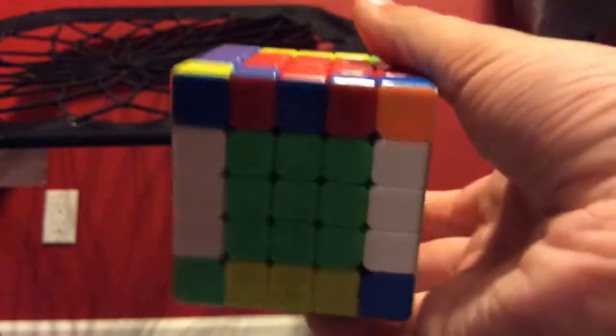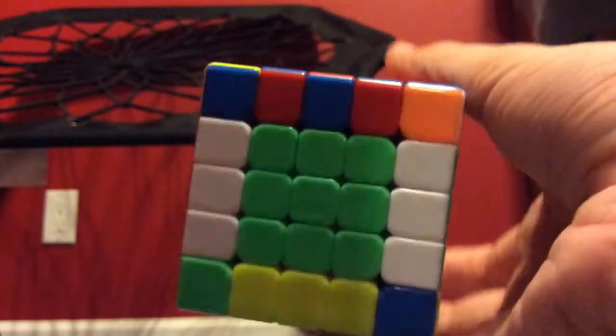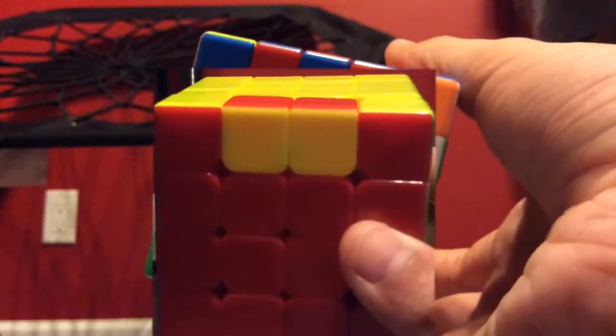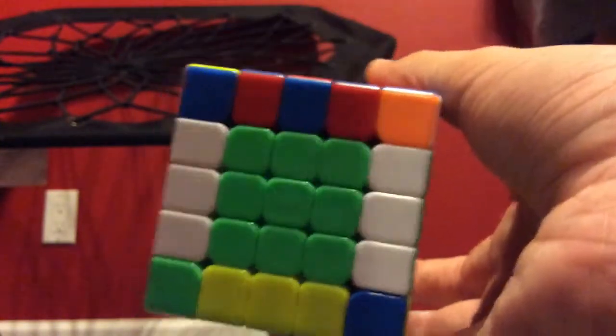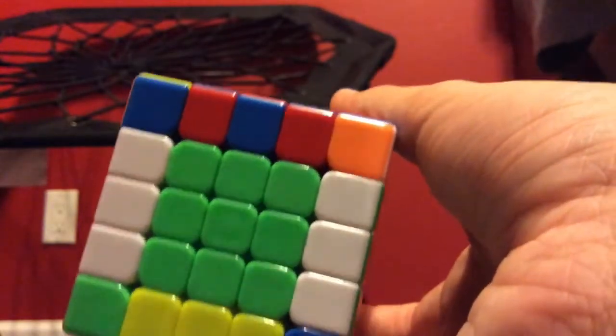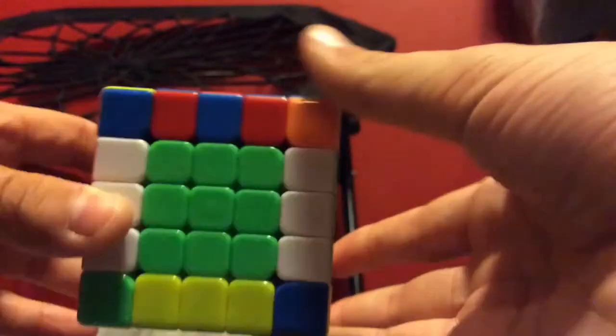And then you do, anyways, once you finish the algorithm, you'll have this edge parity, which is the same as another edge parity you will get on a 4x4, which looks like this. But on the 5x5, you will already know you have the parity, and you won't have to do the cube up until OLL to figure out you have it.